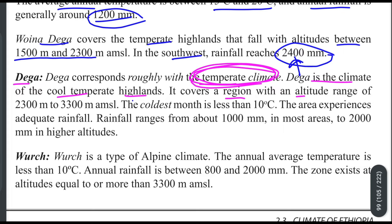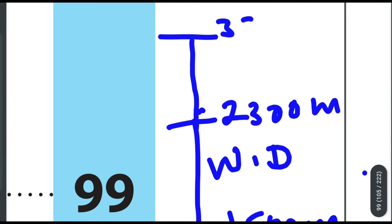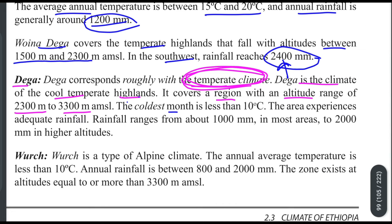The next zone covers a region with an altitude range of 2,300 to 3,300 meters. Rainfall ranges are around 1,000 millimeters, reaching 2,000 millimeters at higher altitudes. This zone generally receives adequate rainfall.